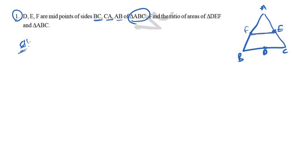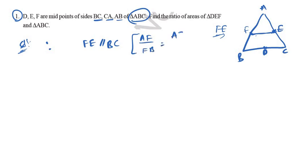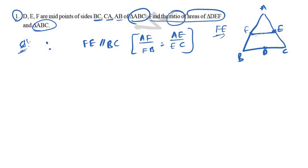If we join these two midpoints, we get line segment FE. Therefore FE is parallel to BC. From the converse of the Basic Proportionality Theorem, AF/FB = AE/EC. We are going to find the ratio of area of triangle DEF to area of triangle ABC using the converse of the Basic Proportionality Theorem.